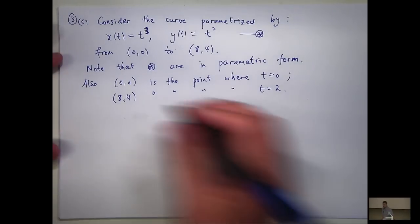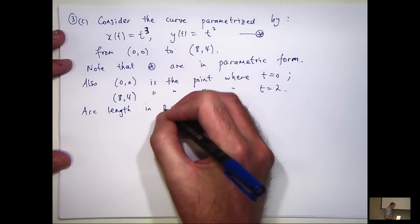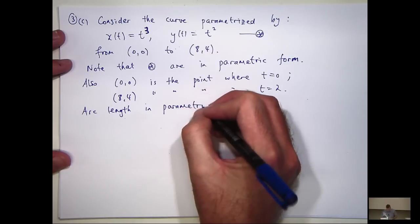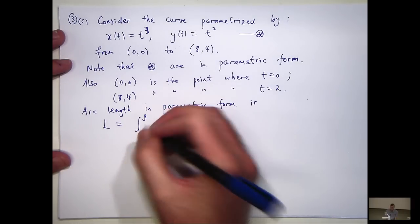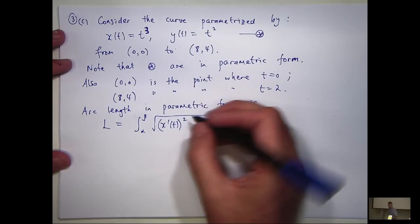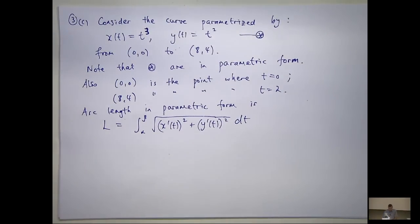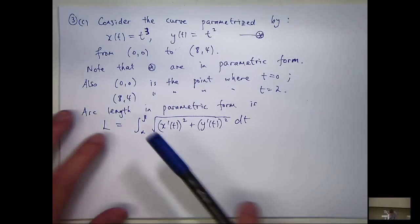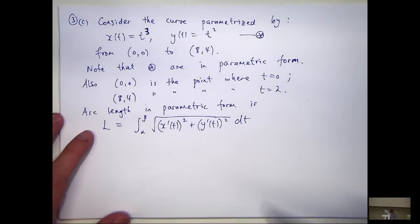Okay, so, the arc length in parametric form is the following. So, x prime of t all squared plus y prime of t all squared dt. So, you can see how it kind of... Well, it's slightly different to the previous setup we had. Okay, so, in this case, the alpha would be zero, the beta would be two, and we just need to calculate the derivatives from this starred parametric setup.